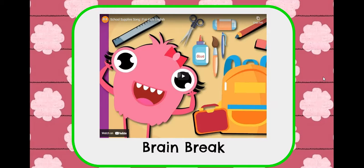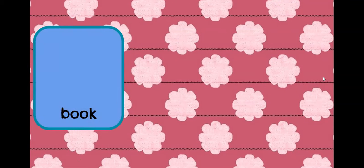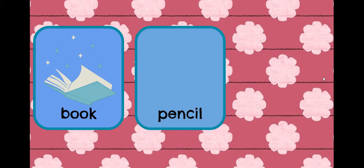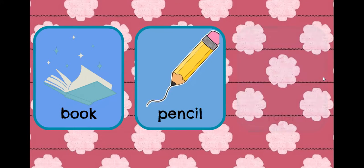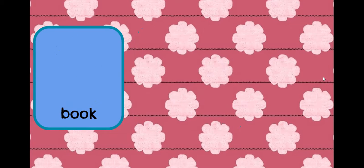Then we have the introduction of the lesson — this is a video that introduces the lesson, done either in a song or a game, so it's a brain break. For Part 1 of the vocabulary, first we say the word, see the word, and repeat the word. We do that for all three words, then undo them and do them again to get the pronunciation.